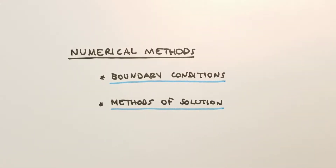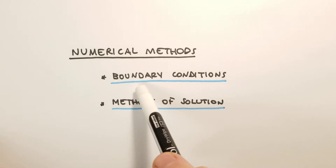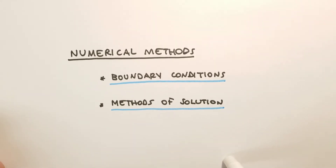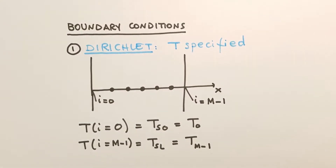Welcome to a new lesson of heat transfer. Today we continue our discussion of numerical methods for heat conduction problems. Specifically, we're talking about how to implement boundary conditions in our numerical methods and also two different kinds of methods of solution. So let's start talking about boundary conditions. Of course we have different kinds, so let's see some cases.